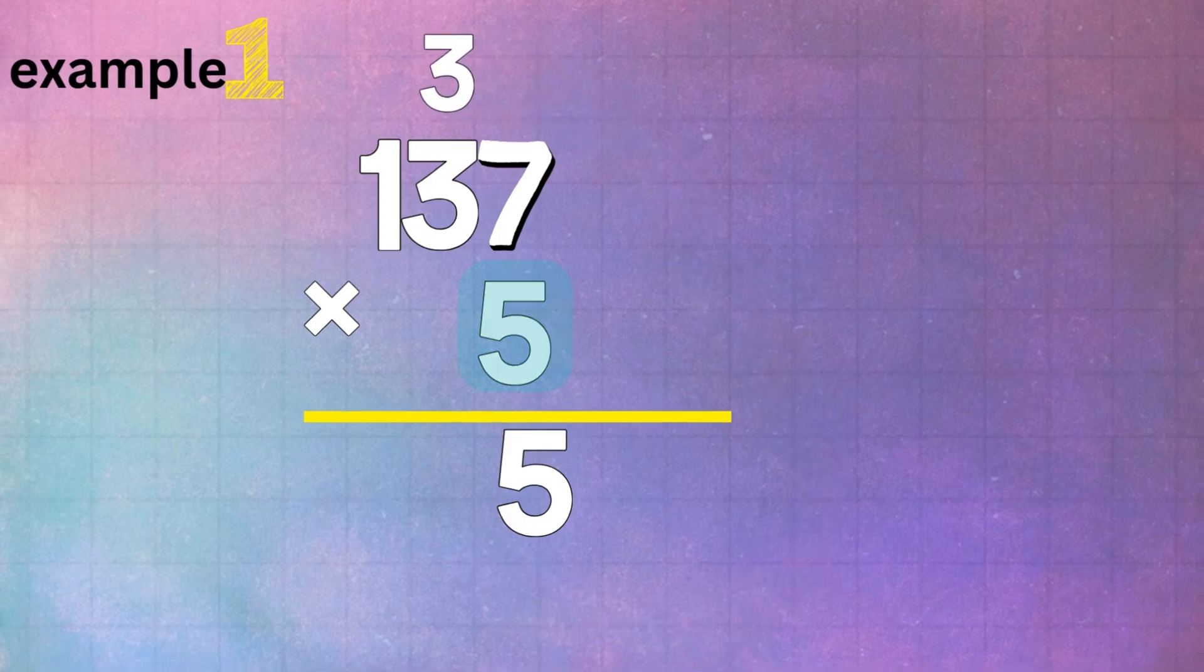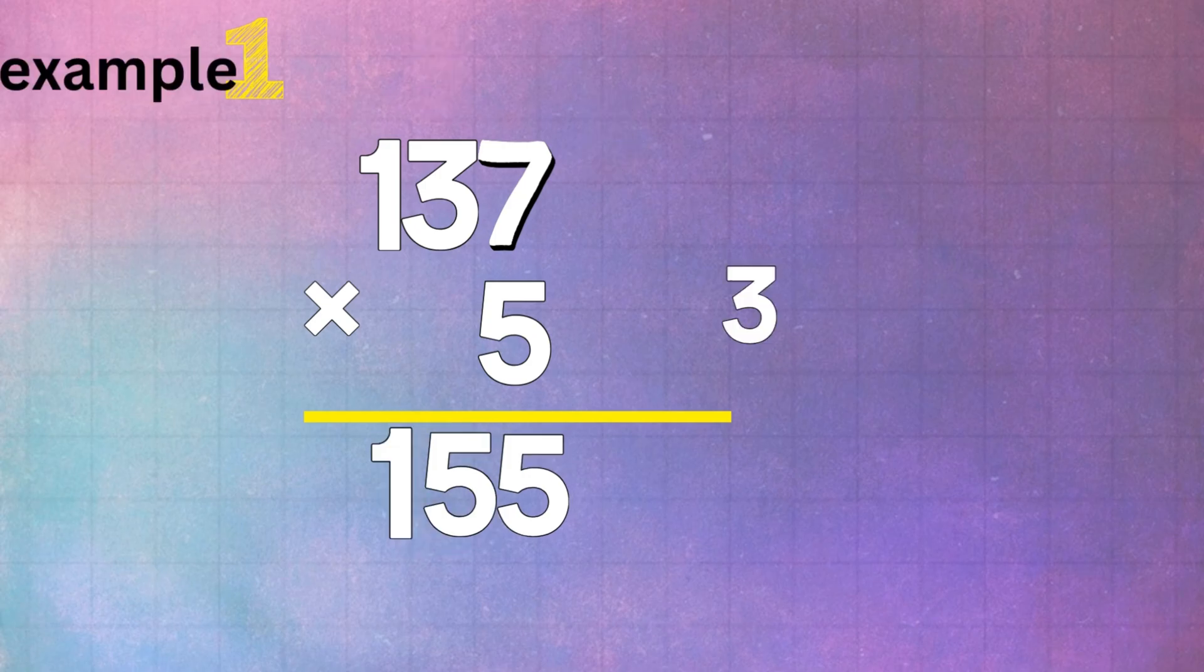Next, multiply 5 times 3, which gives us 15. Add the 3 we carried over, and that gives us 18. We write down the 8 and carry over the 1.